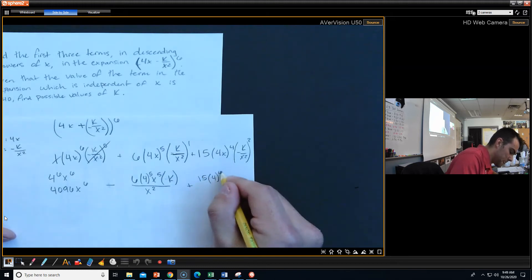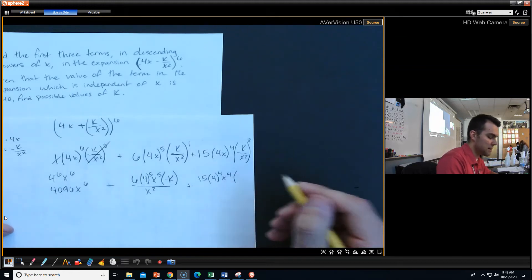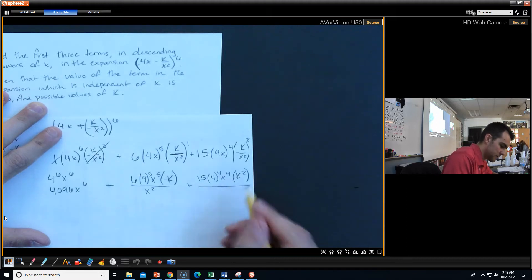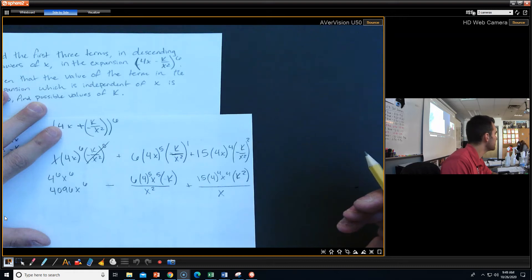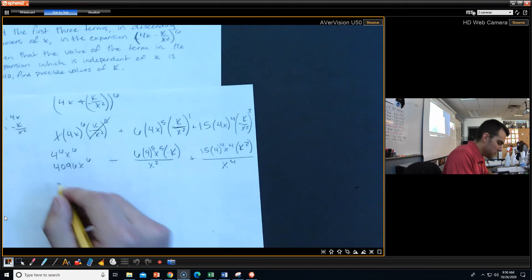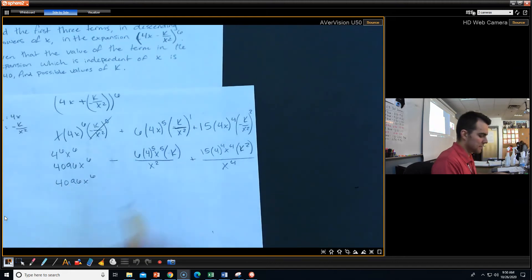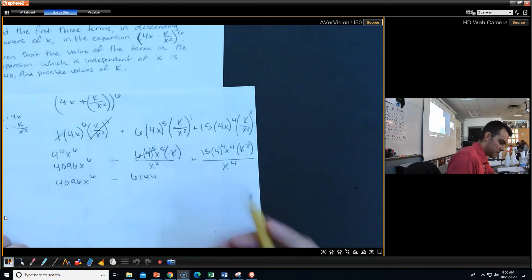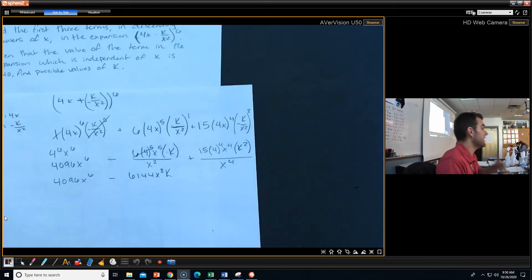Let's move on to this next one. We got 15 times 4 to the 4th, x to the 4th. And this is going to be a negative k squared, so negative k squared is going to give me a positive k squared, which means we're going to have a plus right here. This is all over x to the 4th. After multiplying the 6 and the 4 to the 5th, I got 6,144, and it's x to the 3rd. And then we also have to plop down our k.